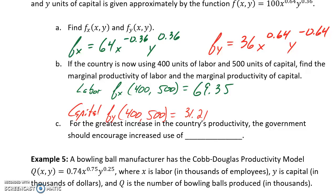Then we're asked for the greatest increase in the country's productivity, the government should encourage increased use of which of these two things? What we see from the marginal productivity of labor is that if our x variable, if labor were to increase by one unit, productivity would increase by a little over 69 units. From the marginal productivity of capital, if our y variable, the use of capital, were to increase by one unit, our productivity would increase by about 31 units.